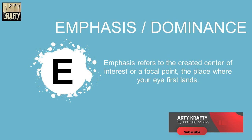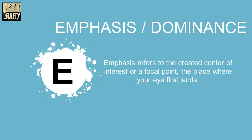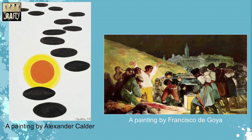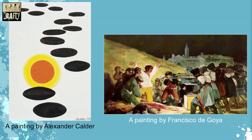Then comes emphasis or dominance. Emphasis refers to the created center of interest or a focal point — the place where your eye first lands. There are two examples of emphasis: the first one is a painting by Alexander Calder.